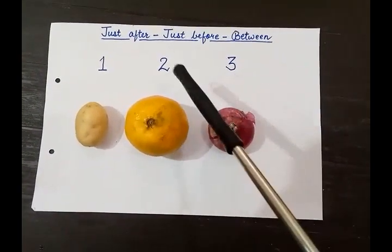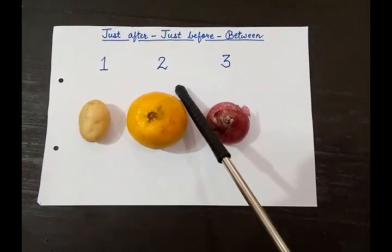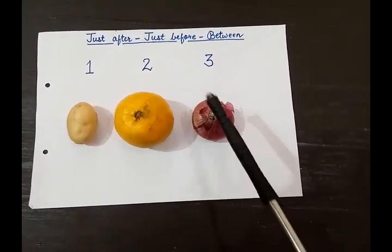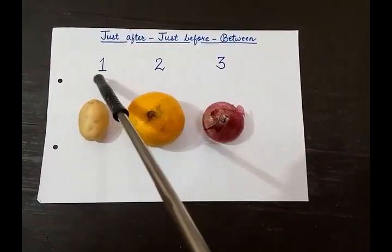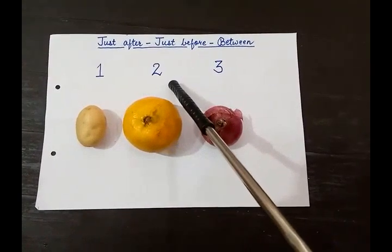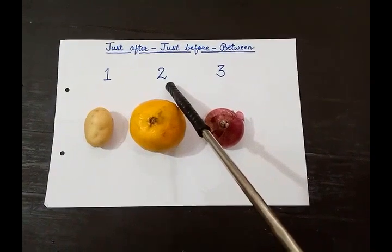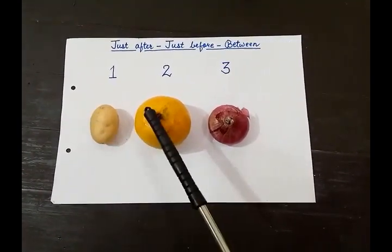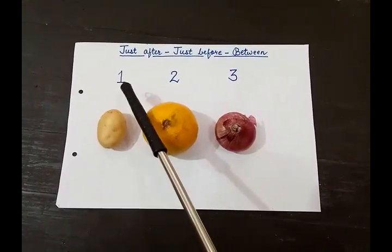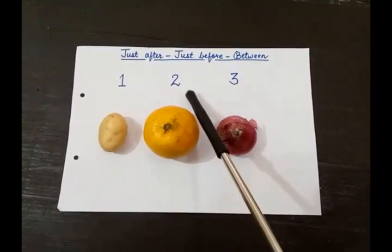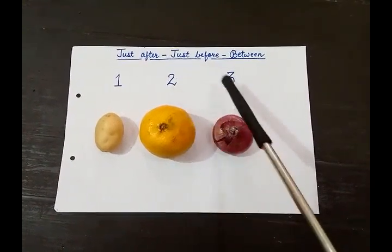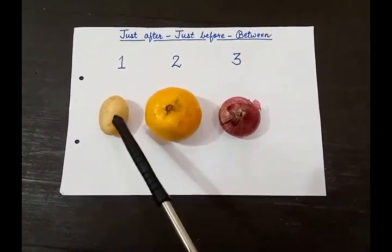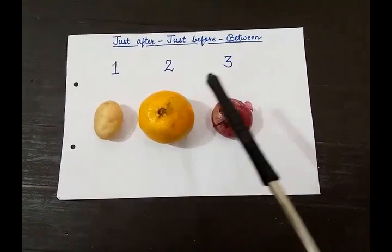Similarly, 2 comes before 3. Potato is before orange, and orange is before onion. With the numbers, 1 is before 2, and 2 is just before 3. Just after means baad mein — 2 is after 1, 3 is after 2. Orange is after potato, and onion is after orange.